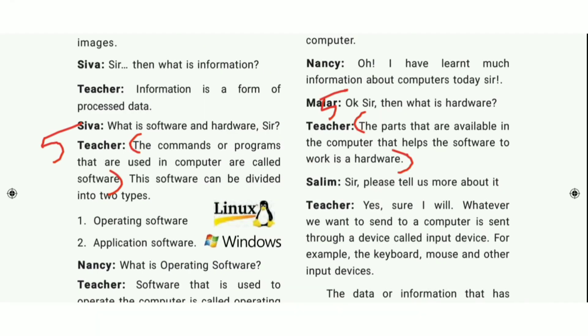The commands or programs that are used in a computer are called software. The parts that are available in the computer that help the software to work is hardware.